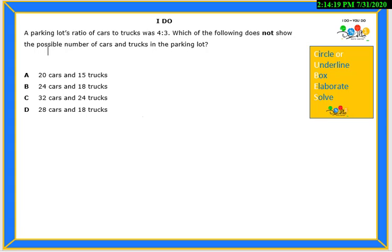Let's go ahead and start by reading the I Do problem. A parking lot's ratio of cars to trucks was 4 to 3. Which of the following does not show the possible number of cars and trucks in the parking lot? On the right side of your screen, you will see the CUBE strategy that we will be working with today.